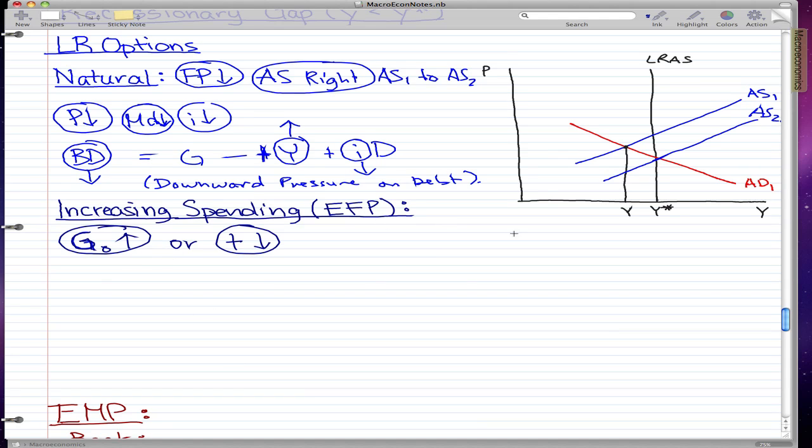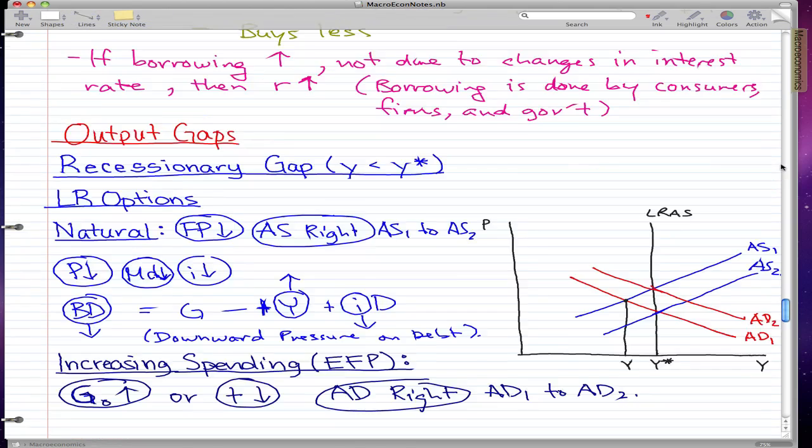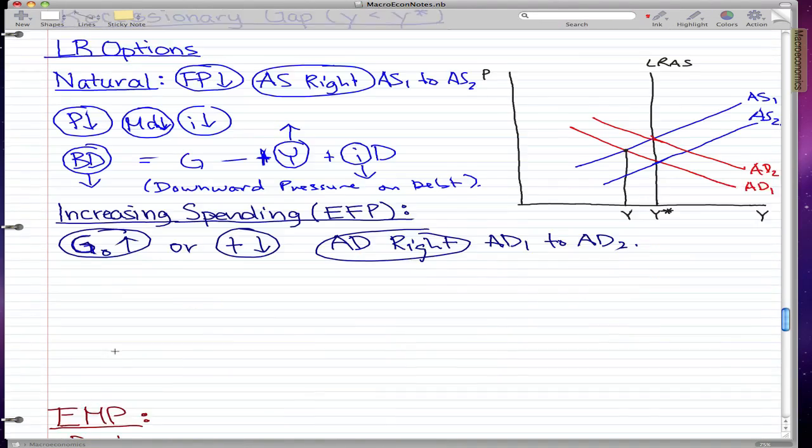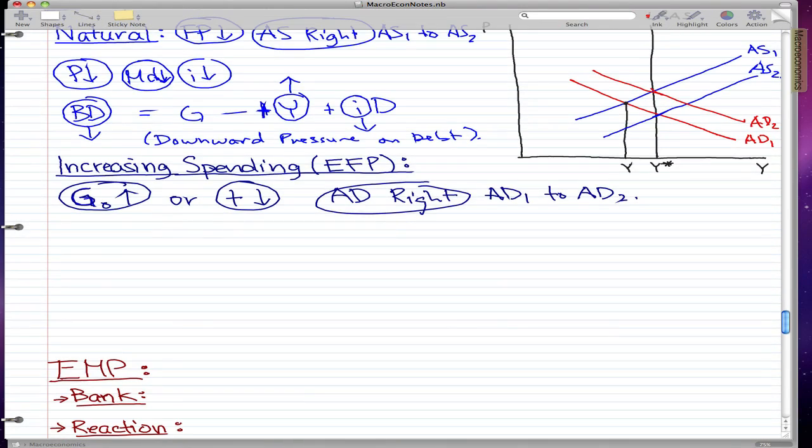So these two things happen. And by doing this, by having our government spending go up and our tax rate falling, our aggregate demand moves right. Aggregate demand moves right from AD1 to AD2. And yeah, this is nothing new. We have been through this before. So aggregate demand moves right to AD2.